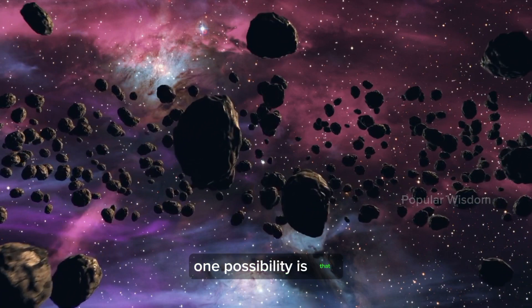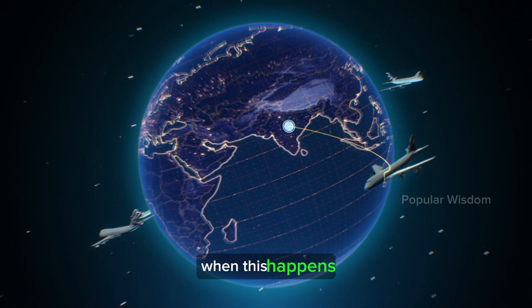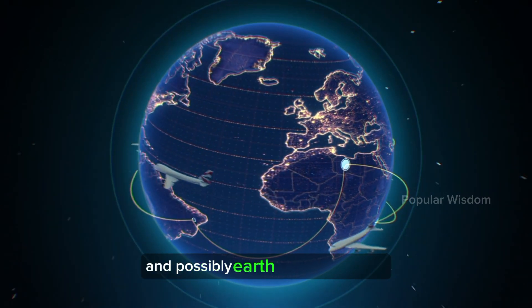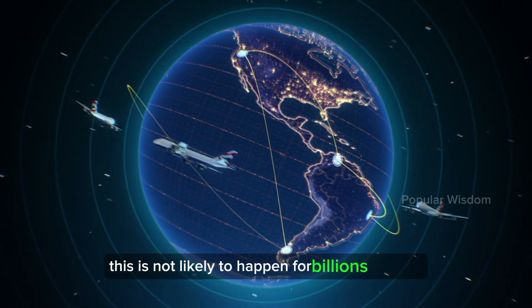One possibility is that the Sun will eventually expand into a red giant star. When this happens, it will engulf Mercury and Venus, and possibly Earth as well. However, this is not likely to happen for billions of years.